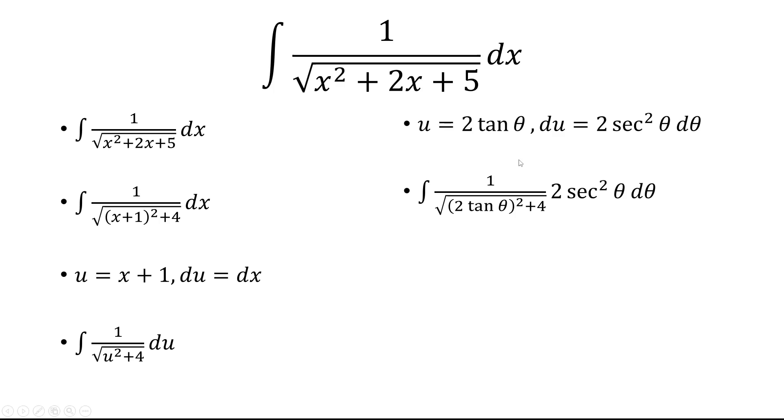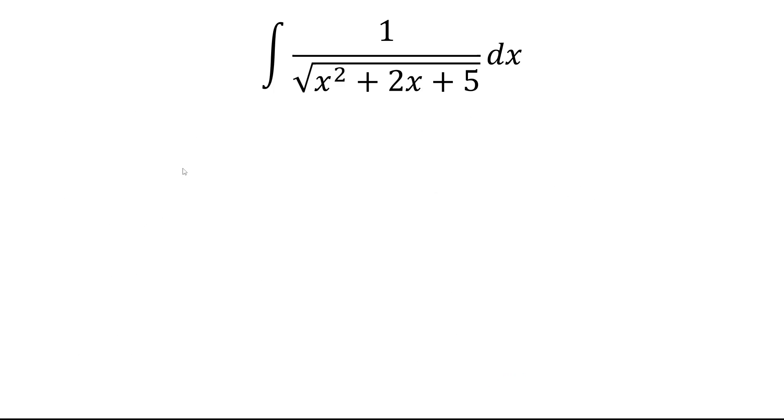So we'll replace u with 2 tangent theta. And when we square that, we get 4 tangent squared. So factoring out the 4 here, we have 4 times tangent squared plus 1. And tangent squared plus 1 is secant squared.